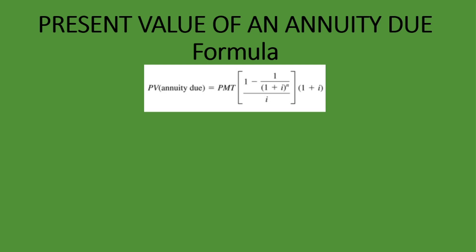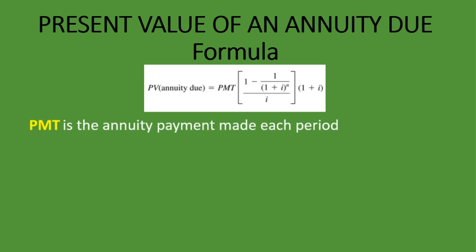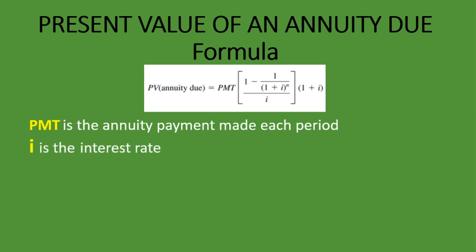So what do these letters stand for? PMT is the annuity payment made each period — whether you're making or receiving the payment, that actual amount is what PMT stands for. I is the interest rate, and it might be written as I or R in your formula — it will mean the same thing, the interest rate.